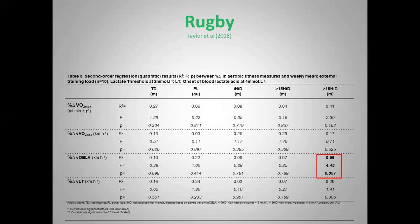We also looked at the relationship with external load measures. Theoretically we wouldn't expect to see a relationship — and apart from high-speed running above 18 km/h, there weren't any relationships between external training load measures and changing fitness.